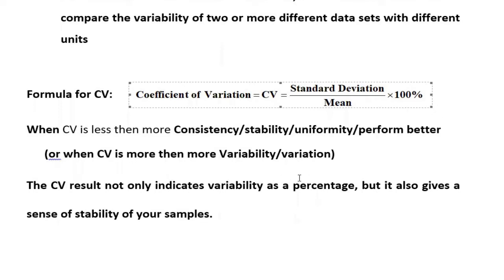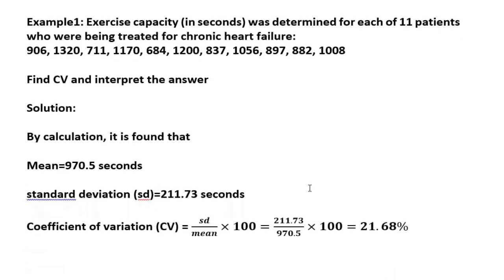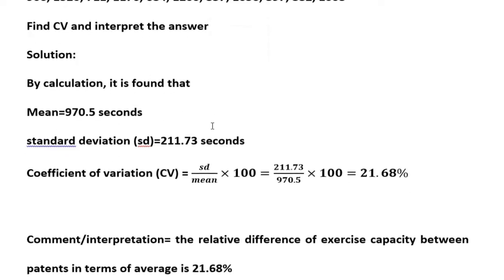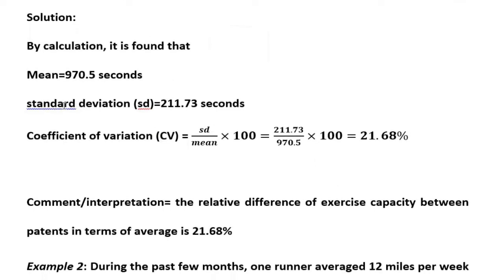Let us look at example number one. This is the exercise capacity in seconds — how many seconds patients exercise. These are chronic heart failure patients, and there is variation in the data: values such as 906, 100, and 320 appear. If you calculate the mean, you get 970.5 seconds, and the standard deviation is 273 seconds.